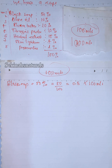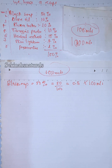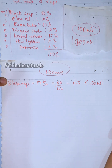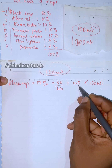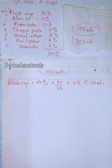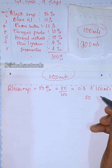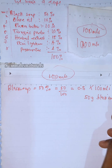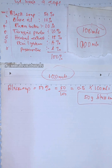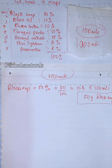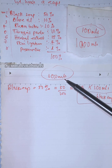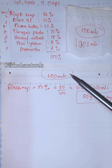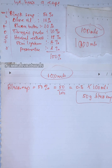For 100 mils of black soap, therefore 0.5 times 100 gives us 50 grams of black soap. So for this same exact recipe but for a different batch size — now we are doing 100 mils — we will need 50 grams of black soap for 100 mils of this recipe.